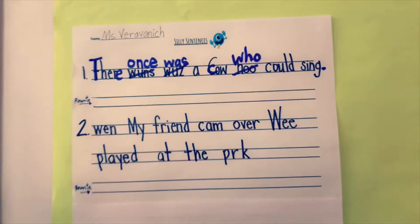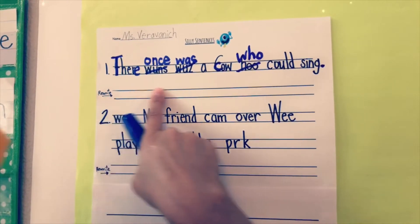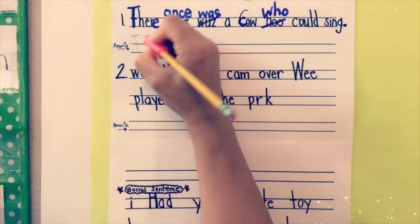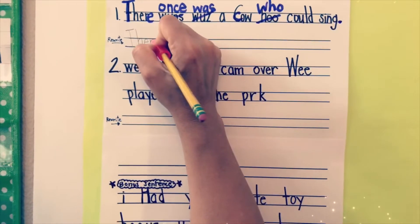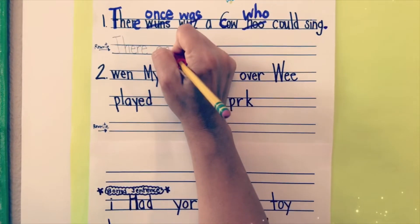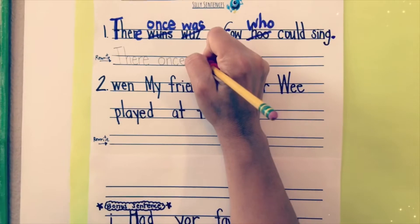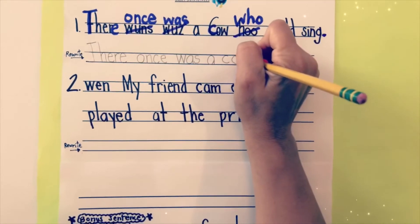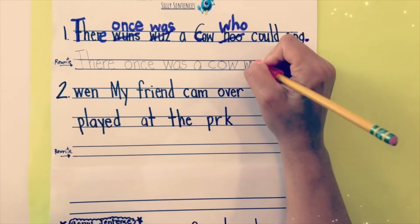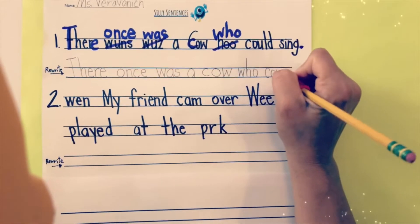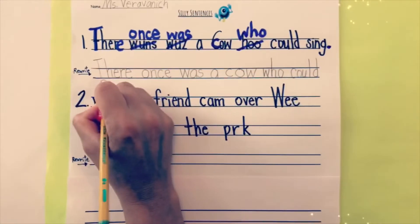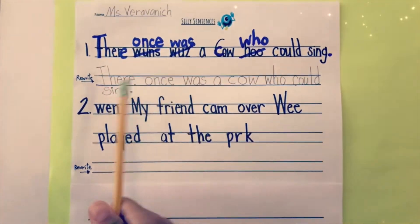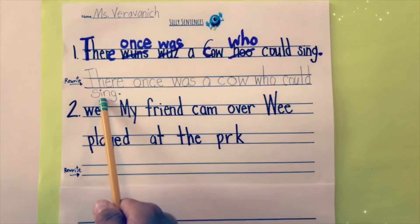Now go get your pencil and we are going to rewrite it correctly on the line below, using our best handwriting skills. Capital T-h-e-r-e, once o-n-c-e, was w-a-s, a, lowercase c for cow, who w-h-o, could — spelled correctly — sing. Don't forget the period at the end. And now we have it correctly: 'There once was a cow who could sing.' That's silly!